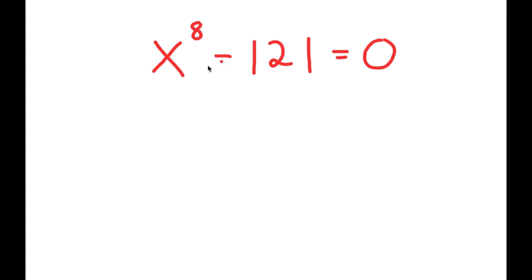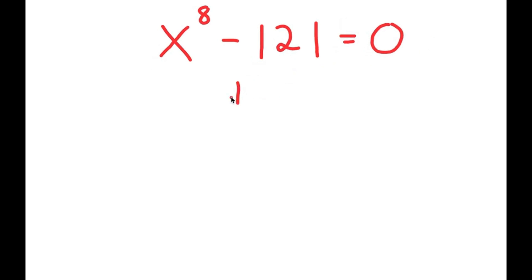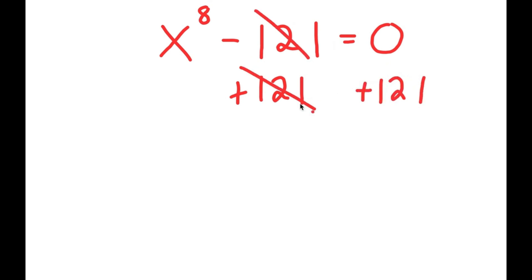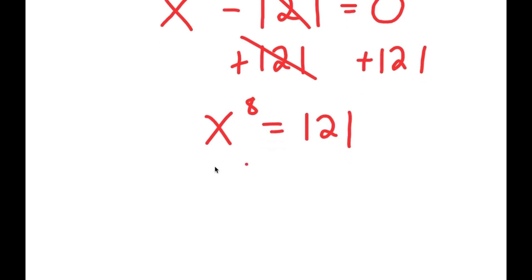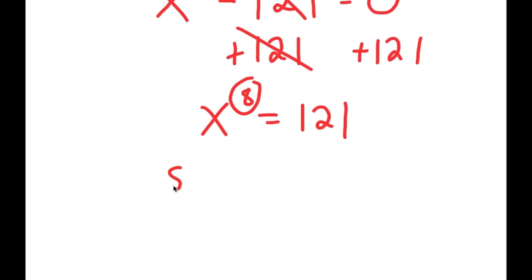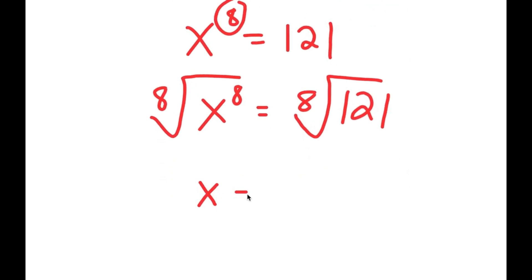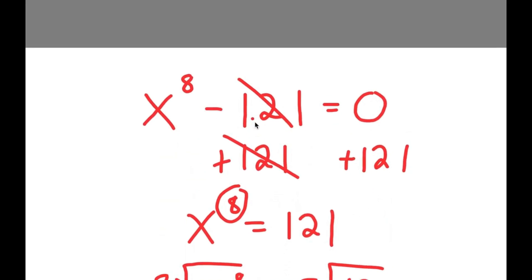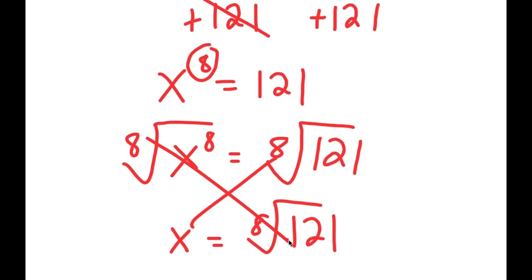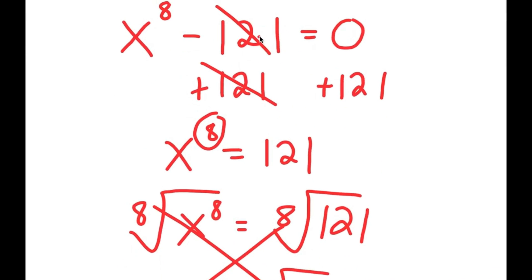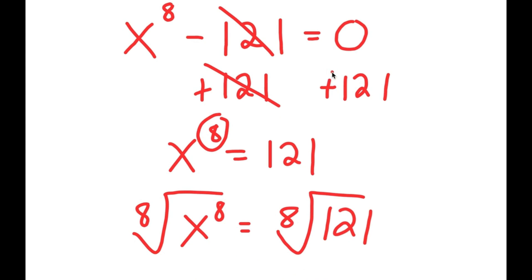In this video, I'm going to be teaching you how to solve the exponential equation x to the power of 8 minus 121 is equal to 0. What most people would think to do is add 121 on both sides to get x to the power of 8 equals 121, then take the 8th root on both sides to get the 8th root of 121. But this method is actually wrong, because there are actually many more solutions than just 2 to this equation, and we want to find all of them.